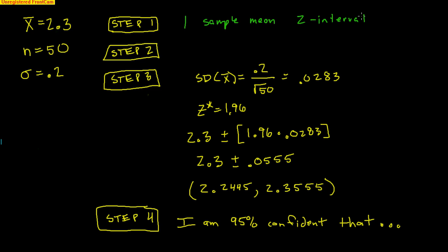Let's check our conditions. Condition one: it's a random sample of 50 bullfrogs. Condition two: 50 is less than 10% of all bullfrogs. Condition three: 50 is greater than 30, so the Central Limit Theorem says we can use the normal model. Our work involves finding the standard deviation of the sampling distribution. We were given that sigma equals 0.2 ounces, so the standard deviation is 0.2 divided by the square root of 50, giving 0.0283.